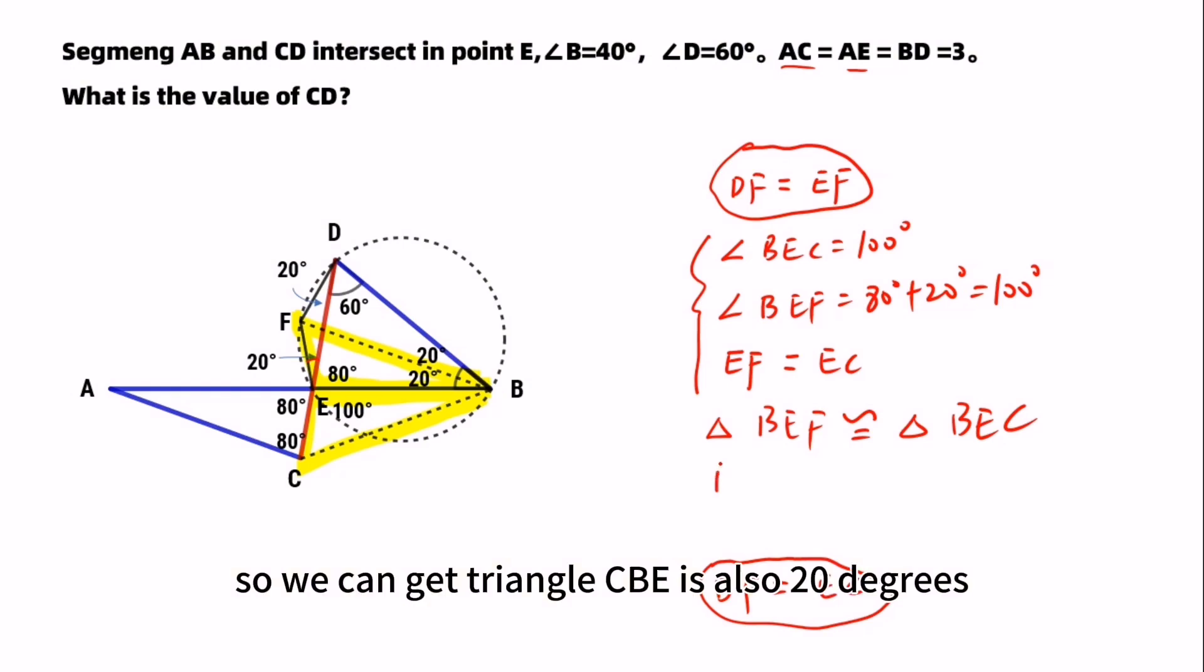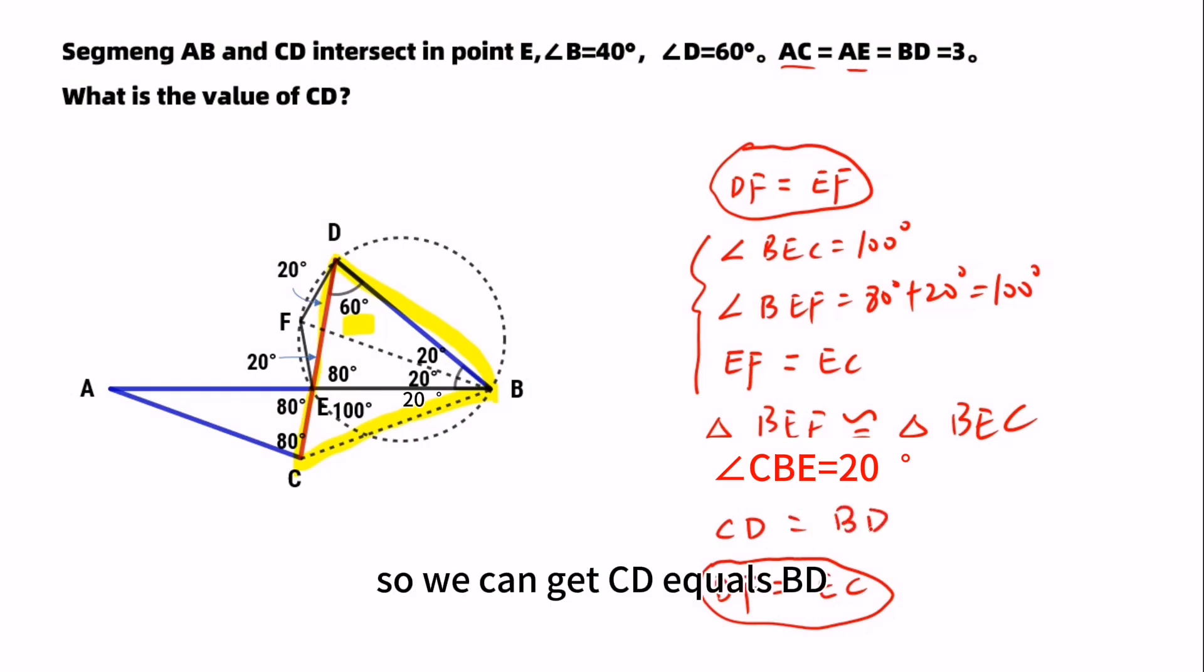So we can get angle CBE is also 20 degrees. So we can get triangle CBE is an equilateral triangle. Therefore, CD equals BD is 3 units. This is the result.